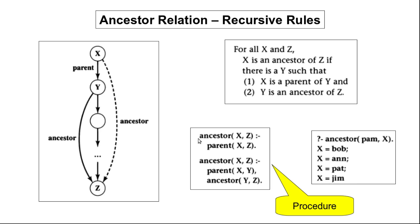When we have multiple clauses to define a single relation, that collection of clauses is called a procedure. Here, to define the ancestor relation we made use of two clauses, and these two clauses constitute a procedure in Prolog. With that I would like to end today's class. In today's class we saw what recursive rules are. In the next class we will see how Prolog answers different questions — how Prolog actually comes up with the answer.